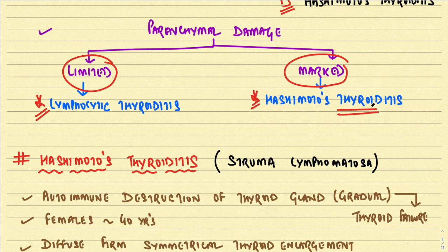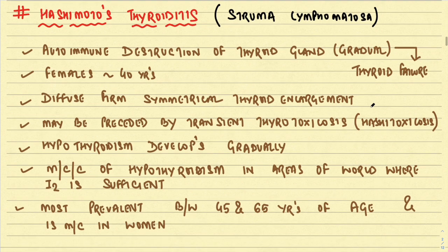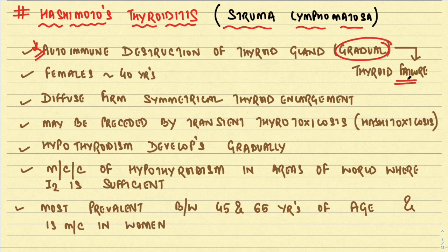We now start with Hashimoto's thyroiditis, also called struma lymphomatosa. It is characterized by autoimmune destruction of the thyroid gland, which is gradual in nature, ultimately leading to thyroid failure. Females are more affected — middle-aged females around 40 years of age. There is a characteristic diffuse, firm, symmetrical thyroid enlargement.